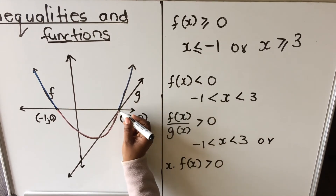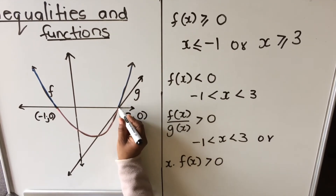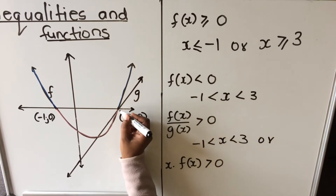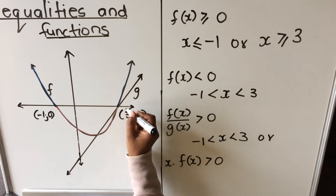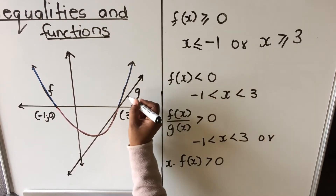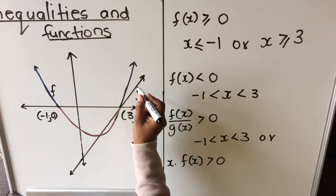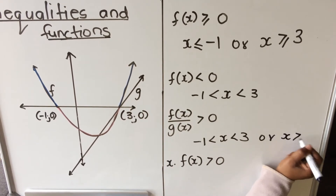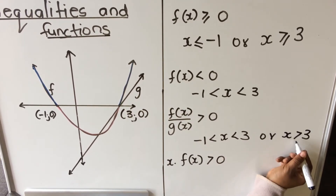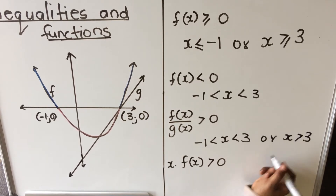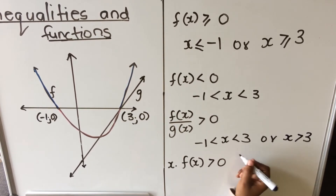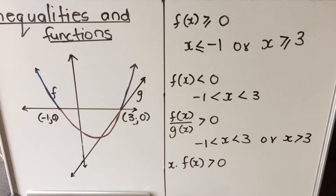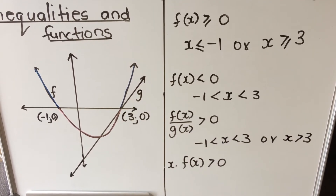When x is greater than 3, both functions are above the x-axis — both positive — so f divided by g will be positive there. My values are x greater than minus 1 for the first region, and x greater than 3 for the second. You must write both answers to show all the places where dividing the two functions gives a positive result.